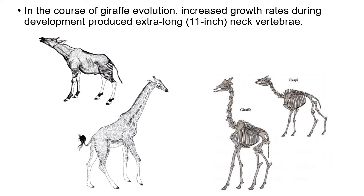Giraffe evolution has puzzled scientists for a long time. Many thought giraffes must have extra cervical vertebrae to support their long necks, but it turns out giraffes actually have the standard seven cervical vertebrae found in all mammals — they're just much larger. Looking at the giraffe's closest relative, the okapi, we can see that through small increases in the length of cervical vertebrae, the giraffe's neck evolved over time, driven by better feeding ability or sexual selection.